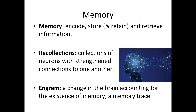When we encode, store, and retain information in our brain, we create a memory. This information can be accessed whenever we think about that specific stimulus or event. Recollections are collections of neurons with strengthened connections to one another. Recall in memory refers to the mental process of retrieving information that has been stored — along with encoding and storage, it's one of the three core processes of memory. An engram is the change in the brain which accounts for the creation and existence of a specific memory — technically, it's the neural substrate of a memory trace.